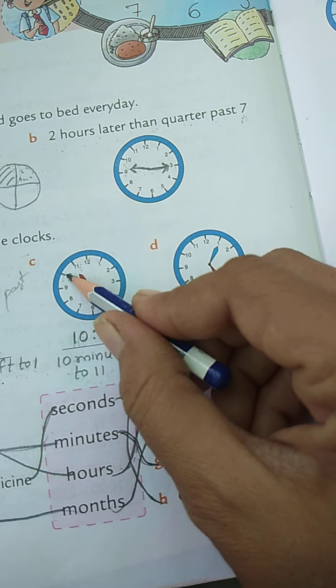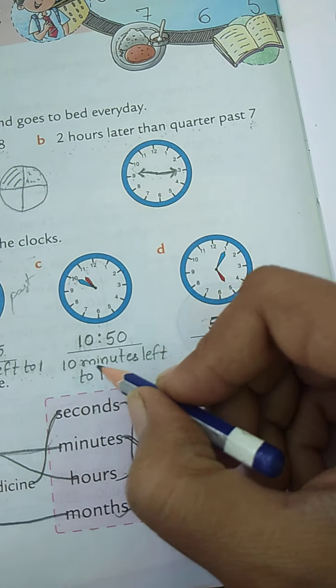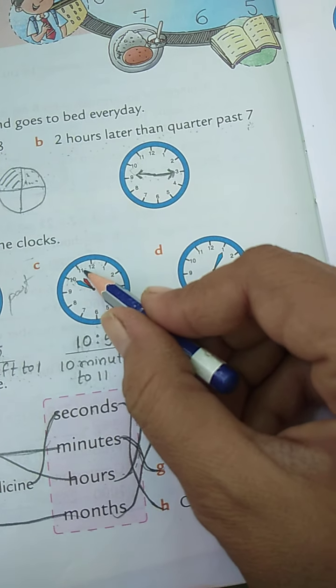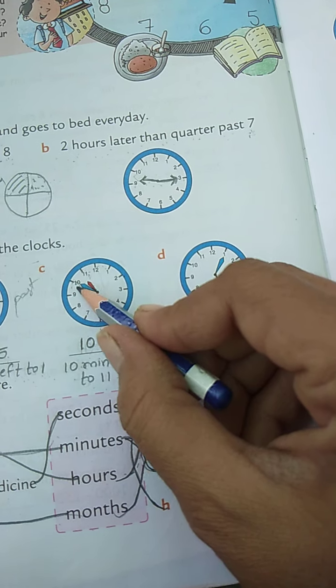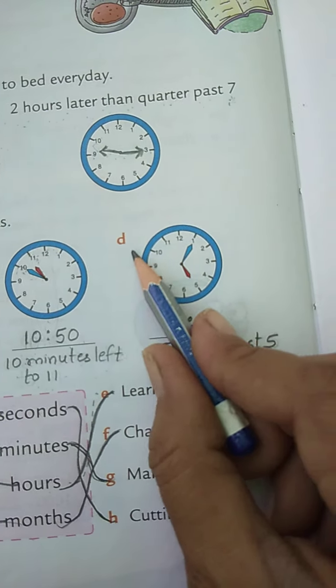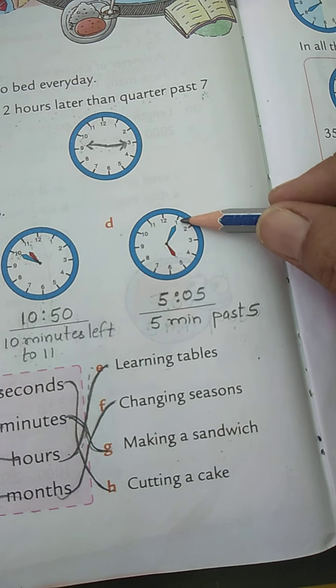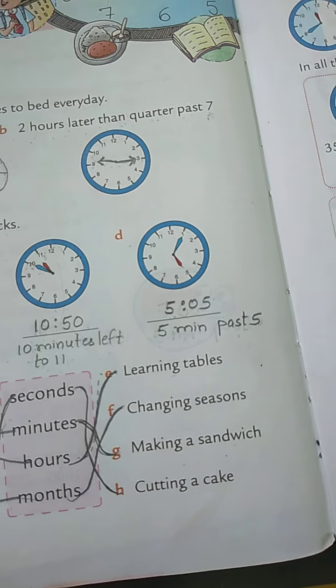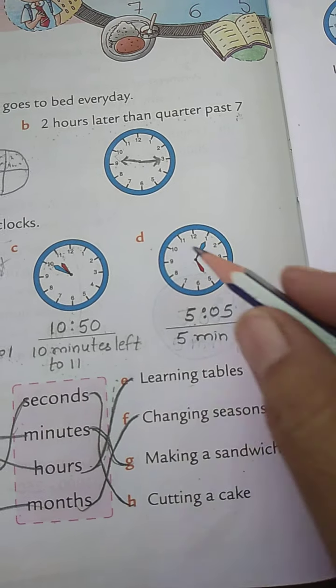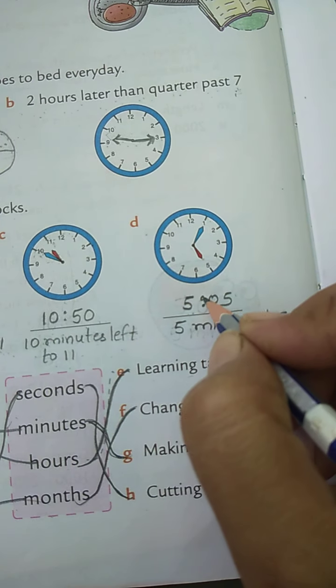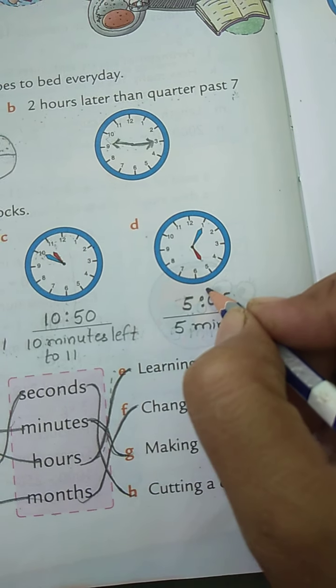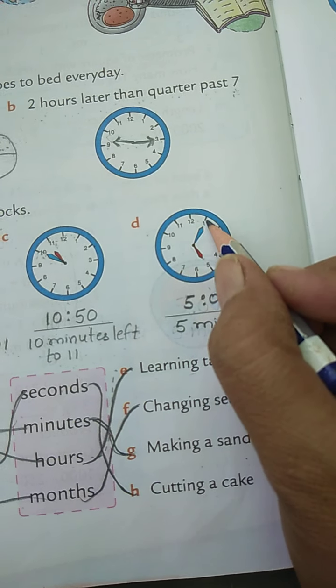And now this side is there, the big hand is between 6 to 12, so left to. Now how many minutes are left? Here 5 and 5, 10. 10 minutes are left to what? 11. That time, do not write 10, otherwise it will be wrong. Next is D: again see here, small hand is on 5 and big hand is on 1, so 1 times 5 is 5. So 5 o'clock and 5 minutes.